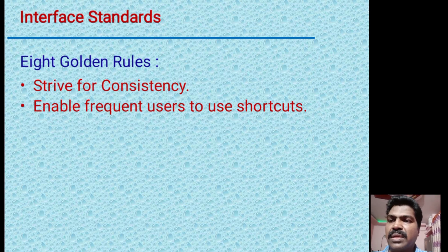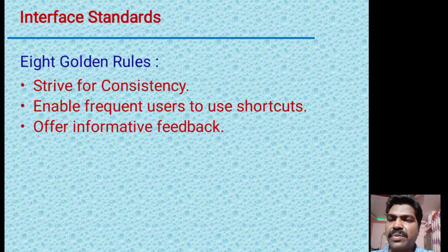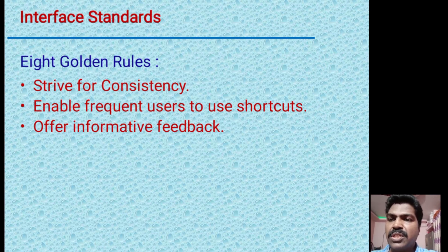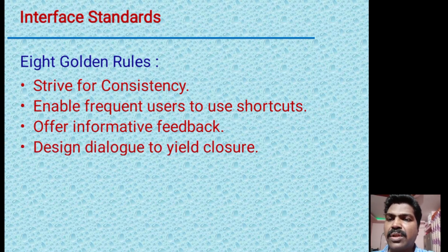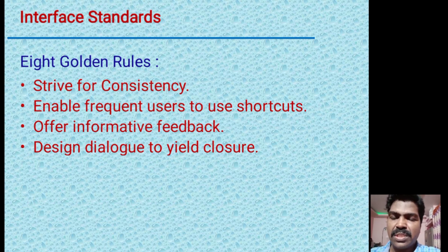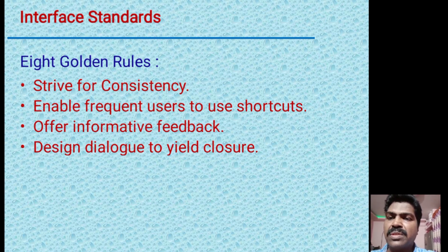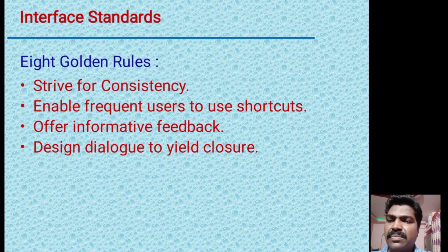The next golden rule is offer informative feedback. For example, when you are sending a Gmail message to someone, you should receive feedback that the message has been sent to the destination. The next rule is design dialogue to yield closure — for example, when installing software, the system should display the status of the installation such as 30%, 70%, or 100%, so you know which stage the process is at.